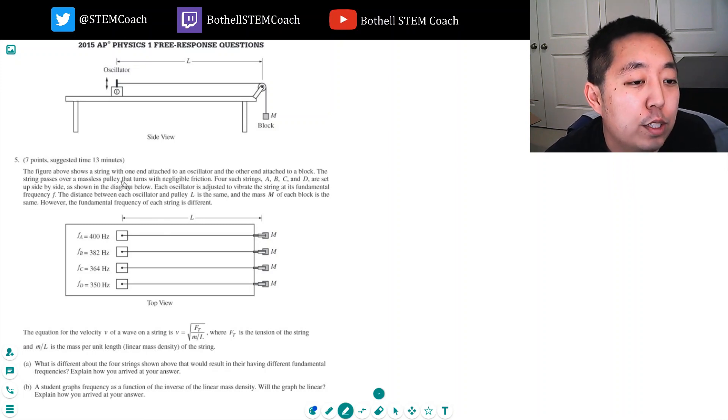The figure above shows a string with one end attached to an oscillator and the other attached to a block. The string passes over a massless pulley system that turns with negligible friction. Four such strings A, B, C, and D are set side by side as shown in the diagram below. Each oscillator is adjusted to vibrate the string at the fundamental frequency F. The distance between each oscillator and pulley L is the same and the mass M of each block is the same. However, the fundamental frequency of each string is different.